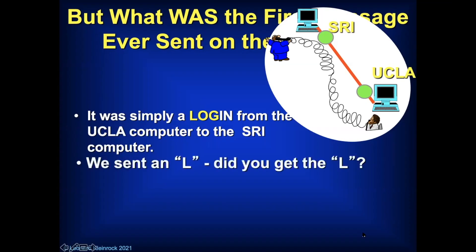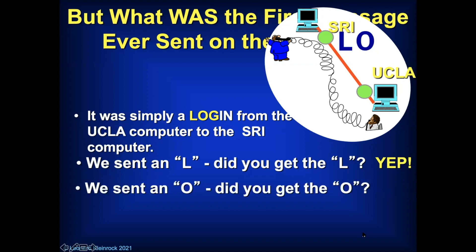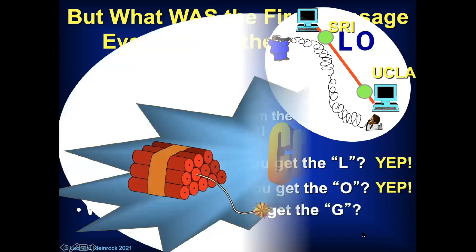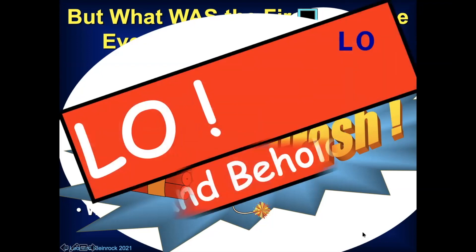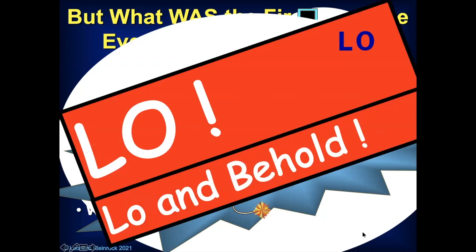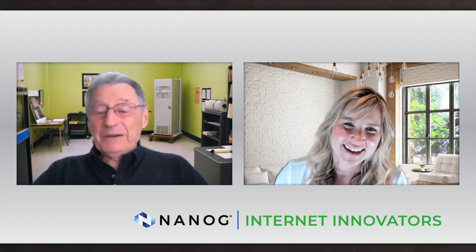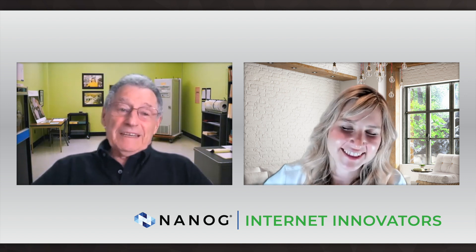So Charlie sent the L. He said, 'Did you get the L?' Bill said, 'Yep, got the L.' We sent the O. 'Did you get the O?' 'Yep, got the O.' We sent the G. 'Did you get the G?' Crash. System went down. The first message ever on the Internet was 'LO' — as in, lo and behold. I added the 'and behold' later, but 'LO' is the very first message. Lo and behold. Beautiful.